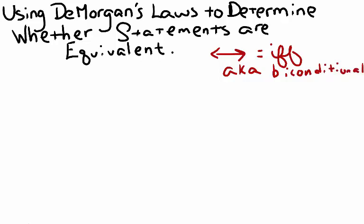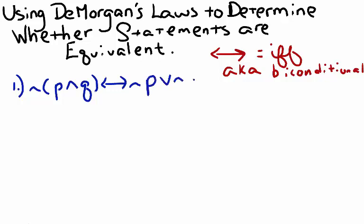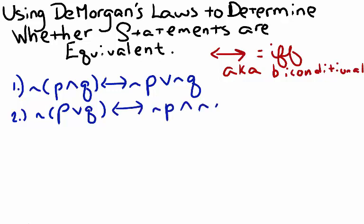Let's take a look at DeMorgan's Laws. The first one states the negation of P and Q if and only if the negation of P or the negation of Q. The second law states the negation of P or Q if and only if the negation of P and the negation of Q.